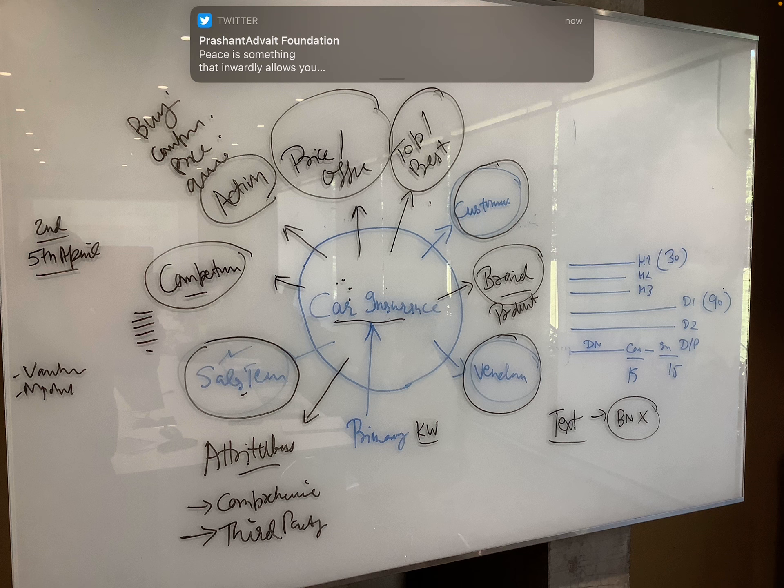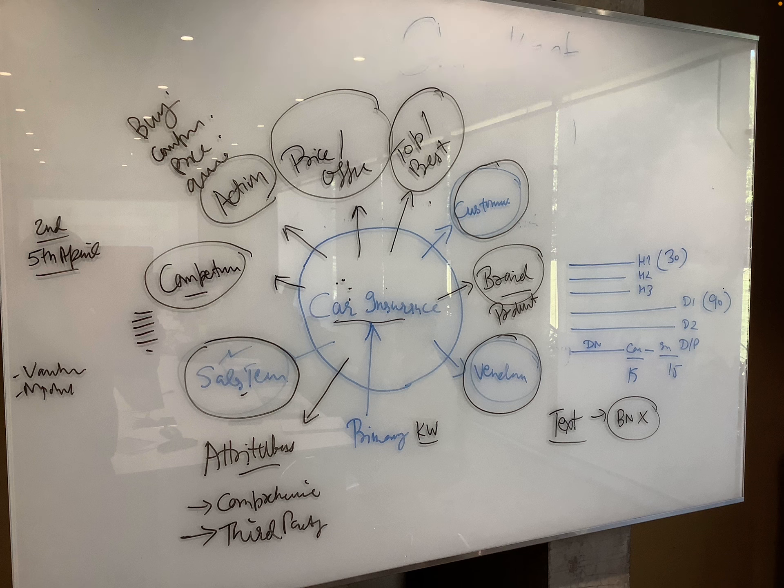For example, if you take 'car insurance' as a key phrase, attributes around that can include keywords like 'comprehensive car insurance' or 'third-party car insurance.' Your sales team or business development people can give a lot of input and insights about keywords. Similarly, your vendors know how they found you as a company or product, and your customers can give insights about how they found you in search engines.